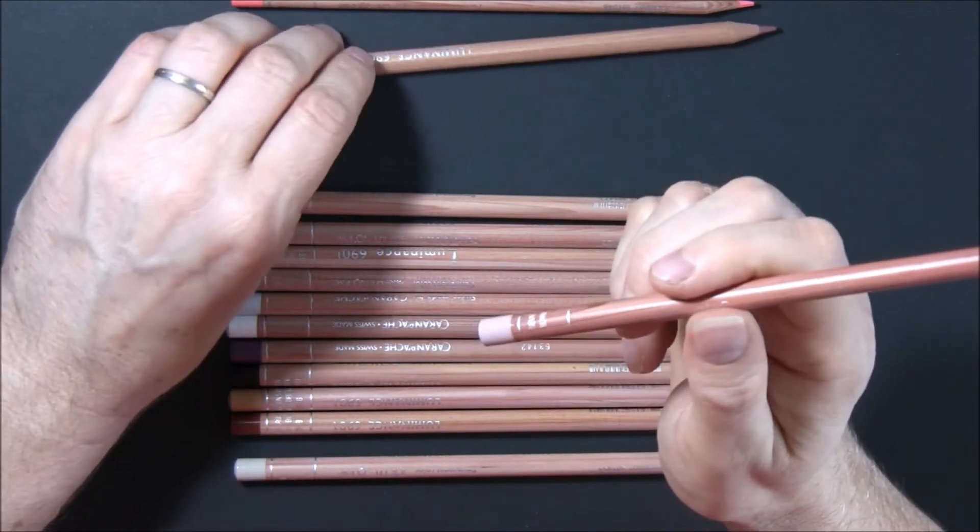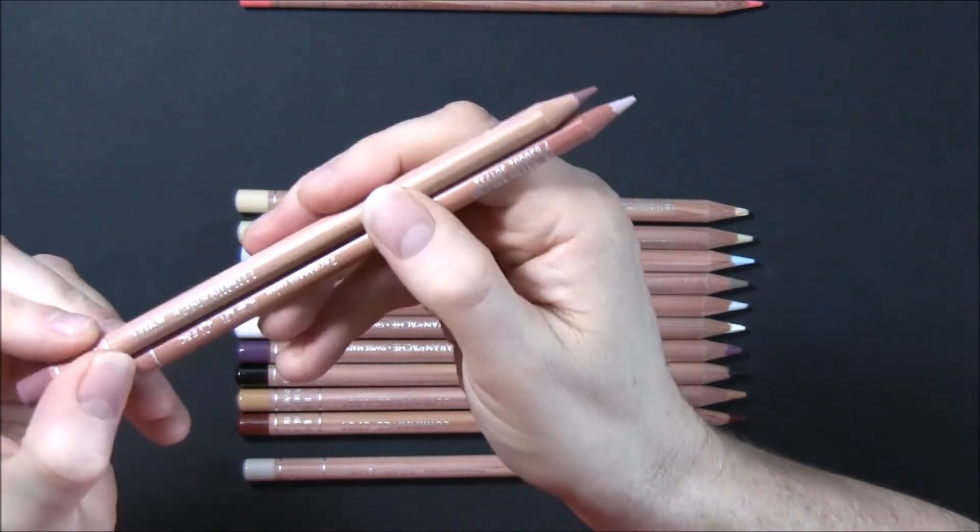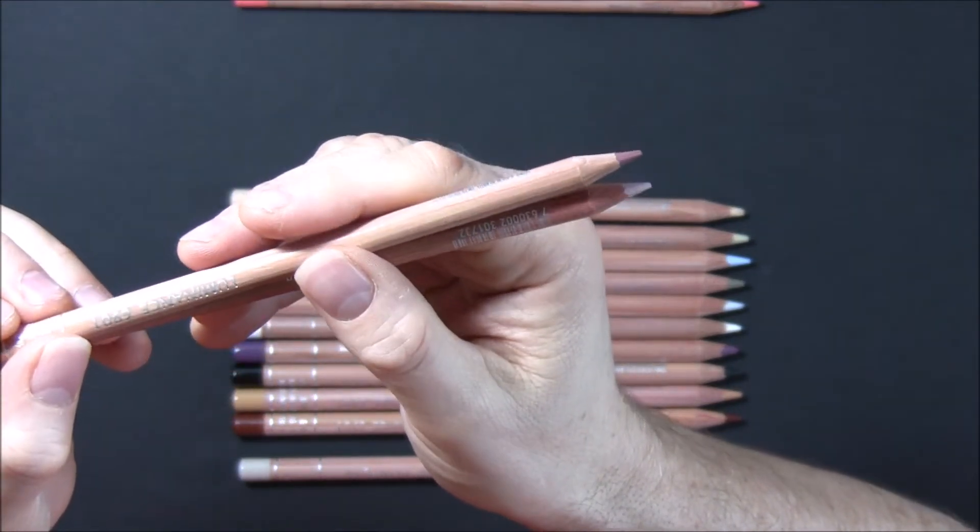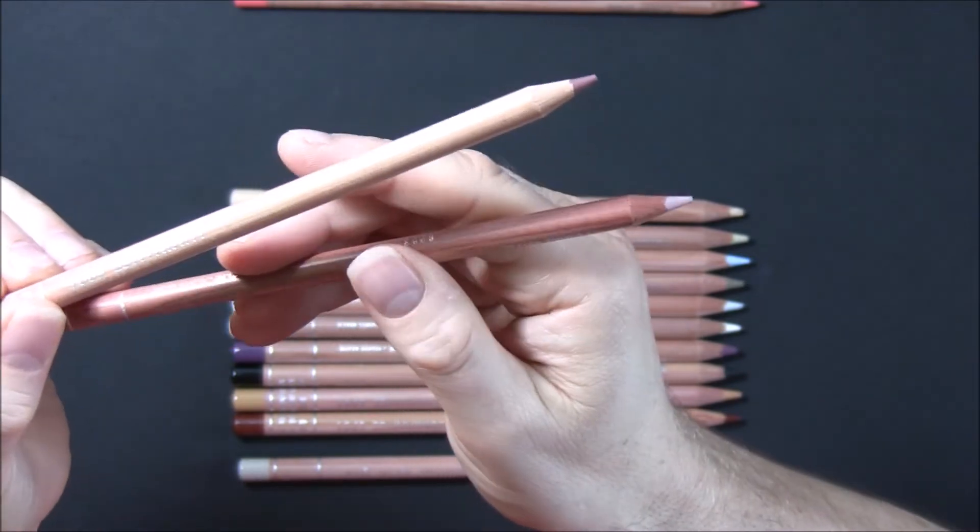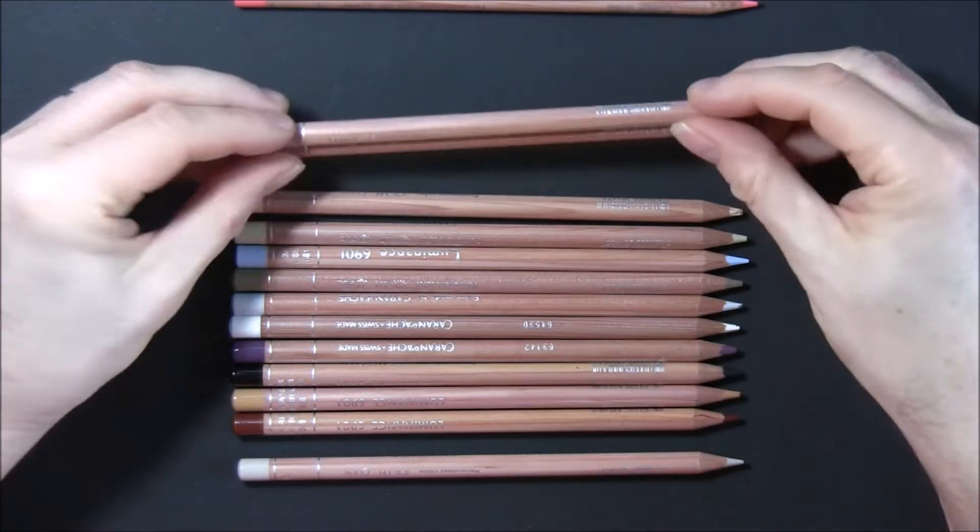This is 862 burnt sienna 10. Now a lot of you might be saying, well what's the difference, you know, not that much difference between 10 and 50, but look at the difference in color. There's quite a big difference in it, also when it goes down on paper as well. That's the 10 on the right and the 50 on the left.